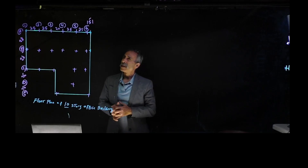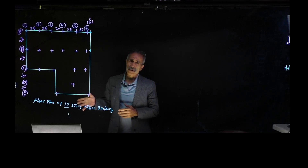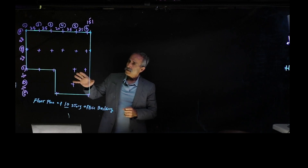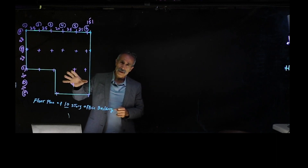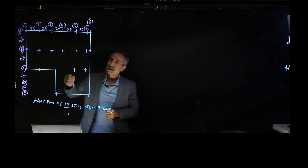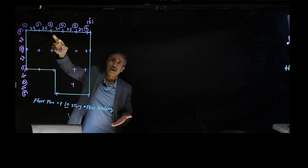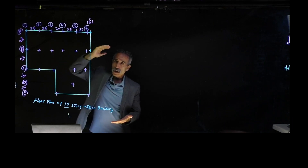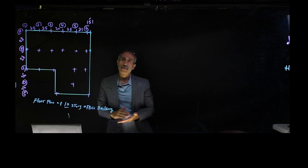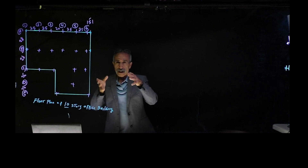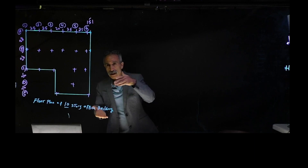Hello and welcome back to another lecture on structural analysis. This time we're going to do a live load calculation. This is a typical floor plan for a 10-story office building, and we'd like to know what is the live load on top of column A3, all the way at the bottom of the first floor. So you're going from the 10th floor and calculating all the way to the bottom of the first floor to find the load due to live load — that column is going to be on a footing.